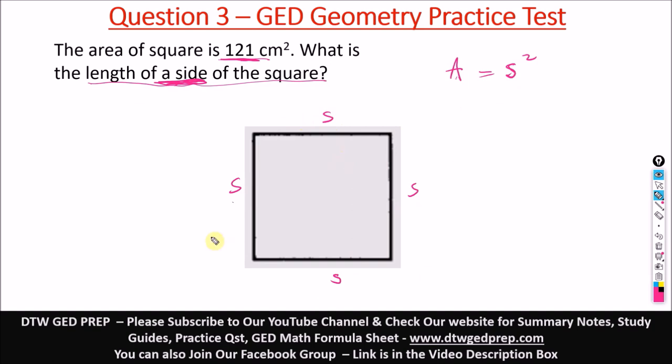Now a square has all sides equal. So if this is s, this is s, this is s, and also this is s. All sides are equal, so we just look for s alone. The area of this square is 121 = s².